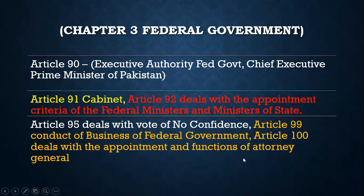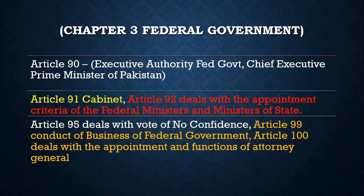Article 99 is related to executive regulations — it deals with the authority to pass regulations for transfer, posting, and similar matters in specific situations concerning the federal government. Article 100 covers the Attorney General of Pakistan. The condition is that the government can have no private practice, and the president and cabinet are involved in this office.